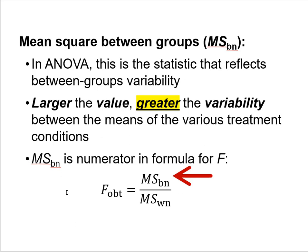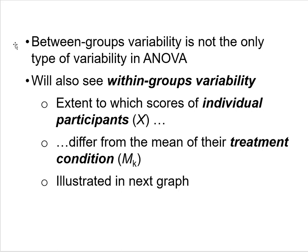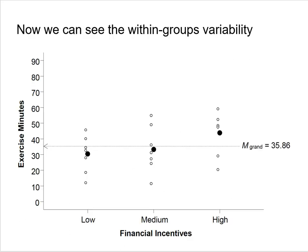Between-groups variability is not the only kind of variability in ANOVA. You'll also see within-groups variability. Within-groups variability is the extent to which the scores of individual participants (represented by x) deviate from the mean of their treatment condition (Mₖ). Within-groups variability is illustrated in the next graph, where smaller open dots represent individual participant scores.